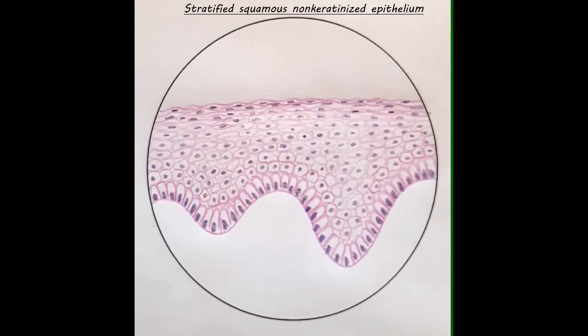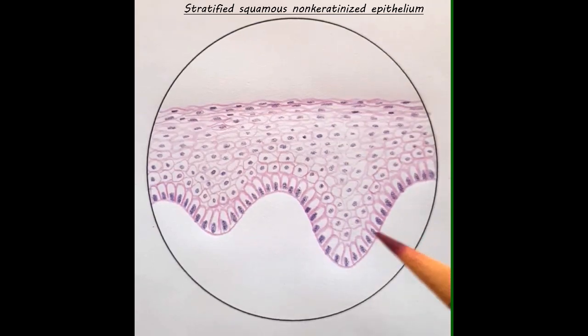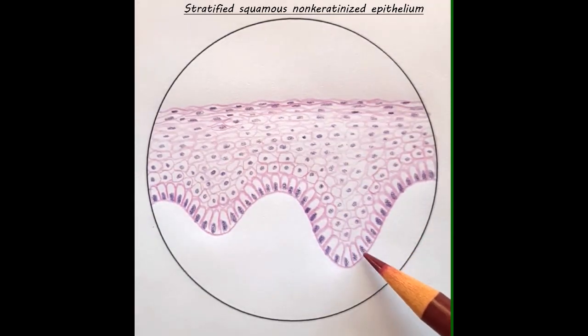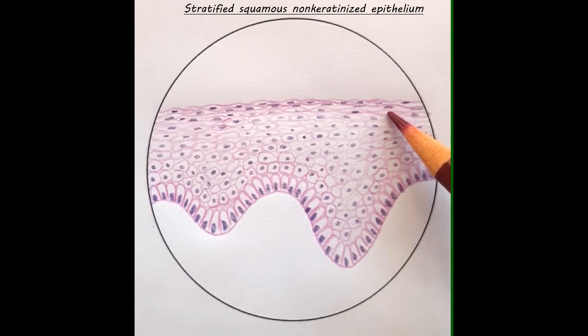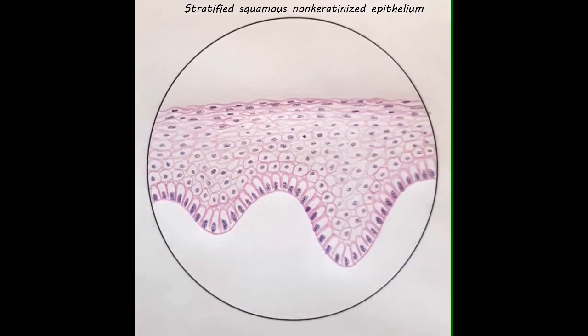Once you are confident about the shape of the nuclei, you can fill the columnar cells and the topmost squamous layer. So the entire change in shape of the nuclei is visible.